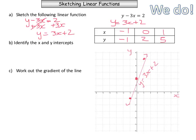The next step is to identify the x and y intercepts. The x-intercept is here and it is x equals negative 0.5. The y-intercept is the point on the line which is 2. To work out the gradient of the line, looking back at our table of values — as x is increasing, the value of y is increasing by 3 every single time. So our gradient is m equals 3.